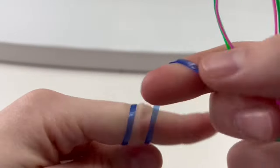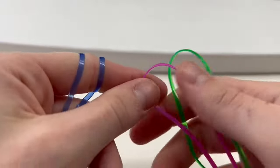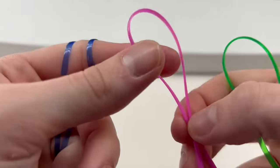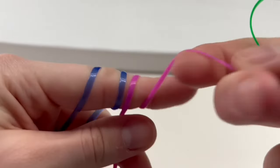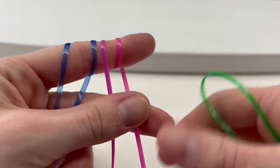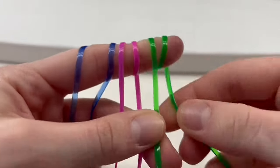Taking the back strand and wrapping it around the front. Doing the same thing with the next strand. Placing the center on your finger, taking the back strand and wrapping it around the front. Same with the last strand, taking the back and wrapping it around the front.